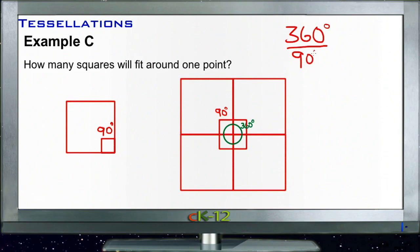So it's going to take one, two, three, four squares to surround a single point. Since that goes in evenly, we know that squares will indeed tessellate. We can draw an entire figure out of nothing but one square next to another, all around, until we have a whole image.